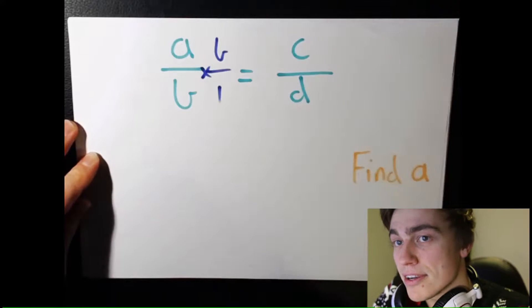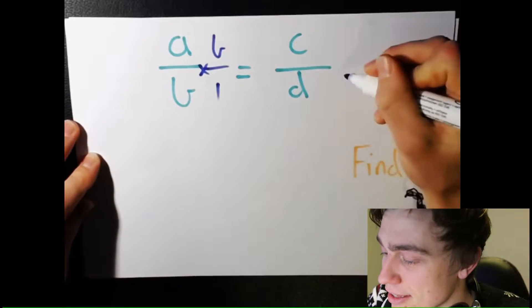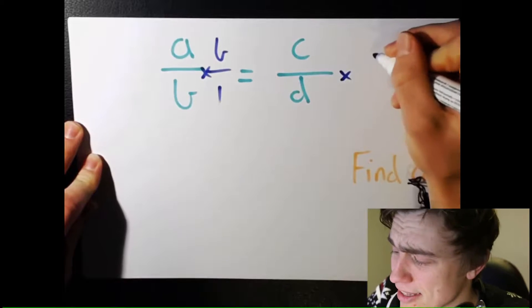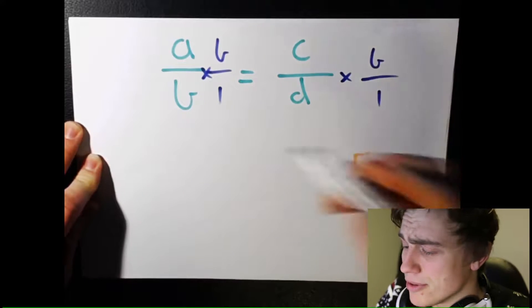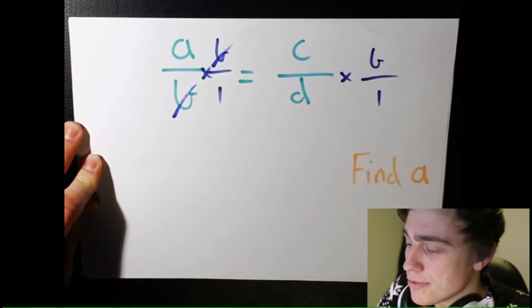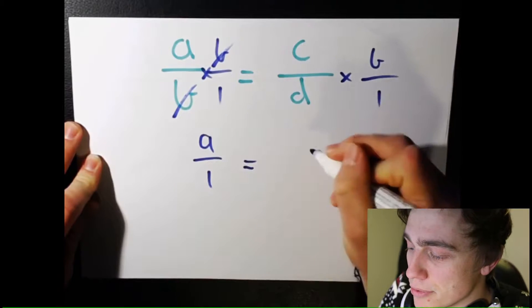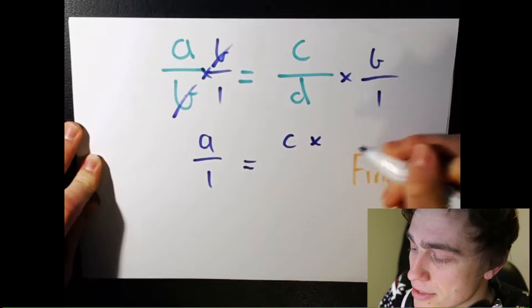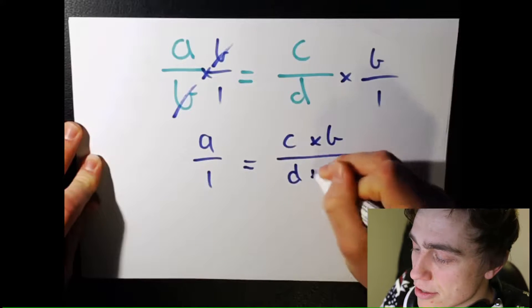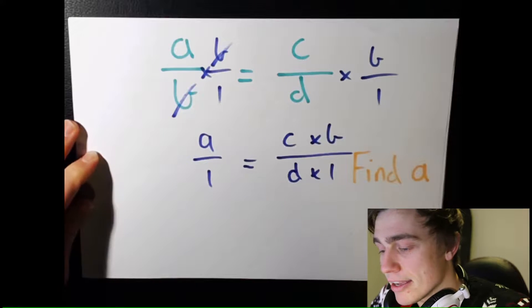Okay cool. Whatever I do on one side of the equal sign, I have to do on the other side of the equal sign. You may remember something like this in high school. B cancels out with itself. I'm left with A over 1 equals C times B over D times 1. Excellent.